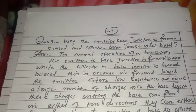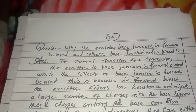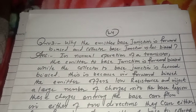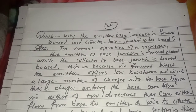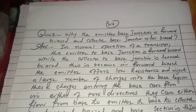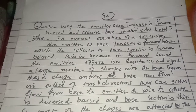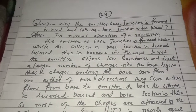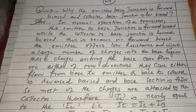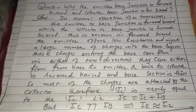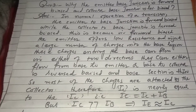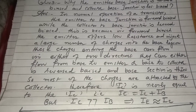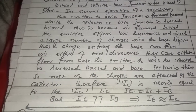While the collector-to-base junction is reverse biased. This is because in forward bias the emitter offers low resistance and injects a large number of charges into the base region. These charges entering the base can flow in either of two directions — from base to emitter or base to collector — as the collector is reverse biased and the base section is thin. So most charges are attracted by the collector, therefore IC is nearly equal to IE. IE = IC + IB, but IC is very, very greater than IB, so IE ≈ IC.